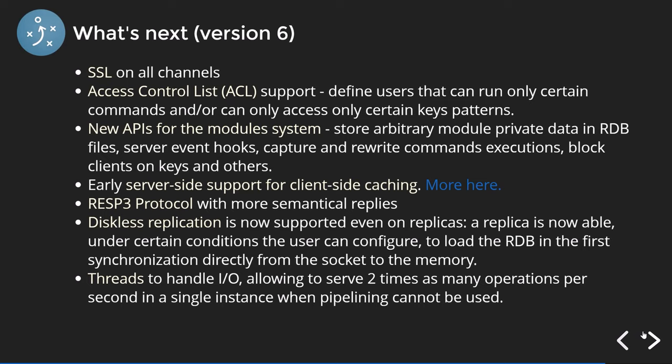Version 6 is already out with several revisions. New features include: SSL on node channels (HTTPS/encryption everywhere), access control lists allowing you to define users and what commands they can run, new APIs for the module system, client-side caching, the new RESP3 protocol with better replies, diskless replication, and better thread performance — up to two times better when it comes to pipelining.